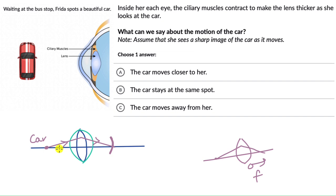So now, even if the car is really close to Frida's eye, this thick lens can still converge the ray to the right place on the retina so that the image is still focused and Frida is able to see the car. This tells us that the car has moved closer to her.